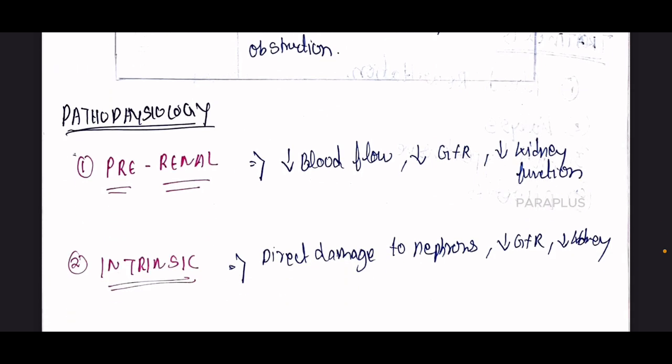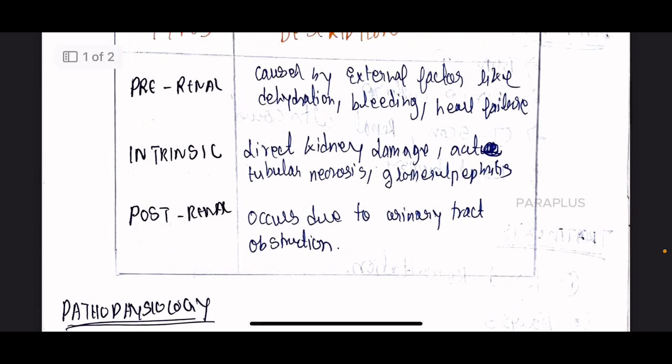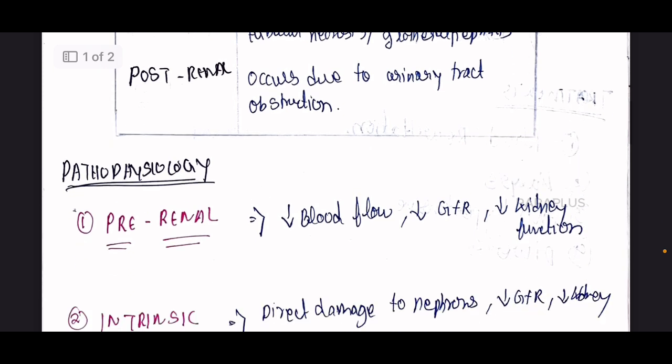Now, let's talk about the common pathway. In Pre-Renal, external factors like dehydration, bleeding, or heart failure cause reduced blood flow. For example, in heart failure, the amount of blood flow delivered to the kidney is reduced.